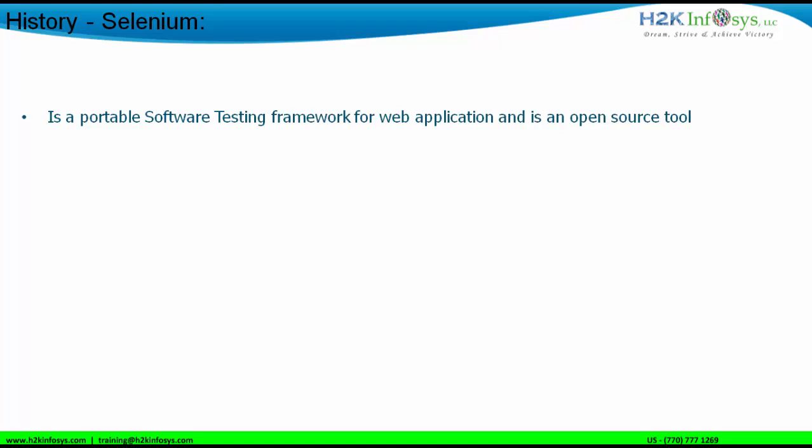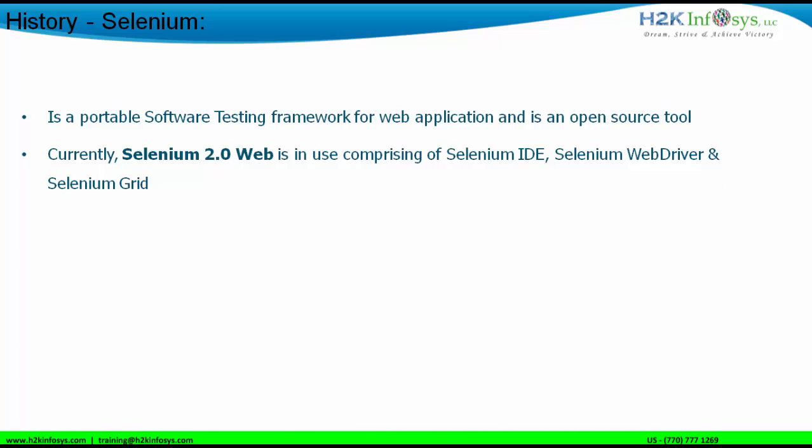Selenium is specifically very important and widely used based on the fact that it is an open source tool. The other tools I've mentioned are all commercial tools available in the market. Selenium gives you a complete framework to automate your web applications and get results out of it. Since it is open source, companies are interested in using it because there is no initial investment required. The latest version is Selenium 2.0, comprising Selenium IDE, Selenium WebDriver, and Selenium Grid.